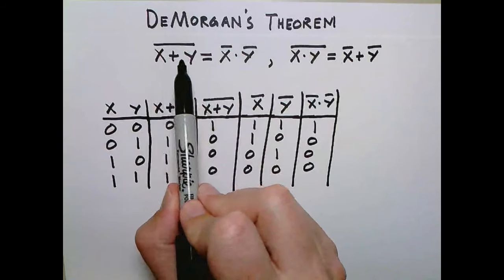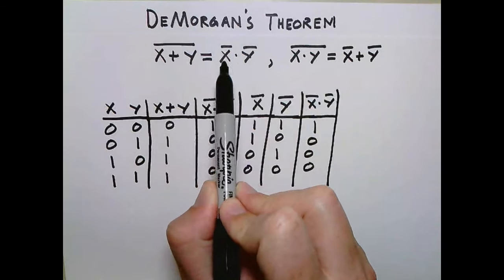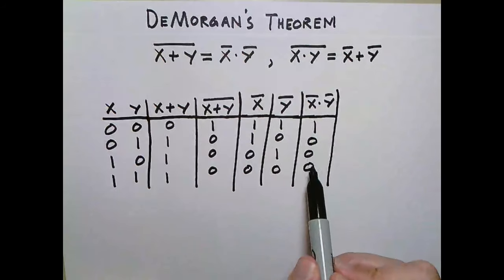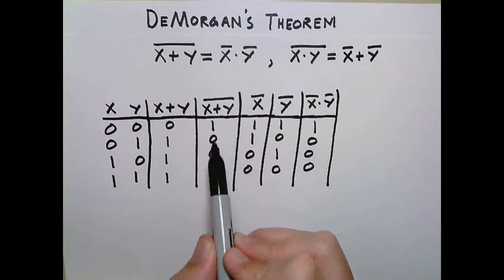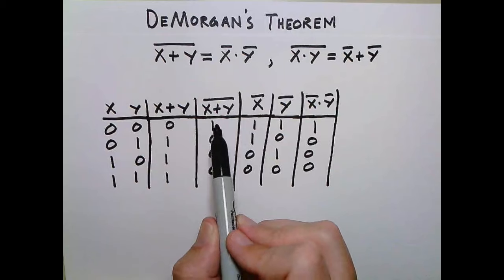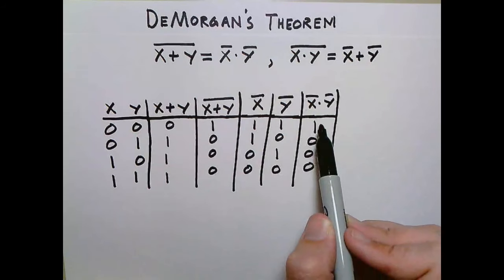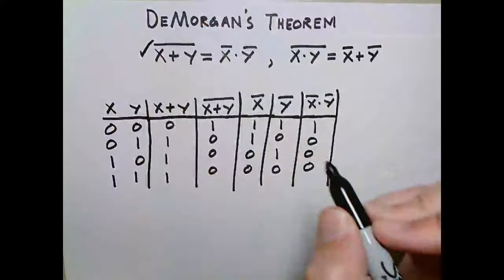So we have not x or y is equal to not x and not y, so this column should be equal to this column, and you can see they both go 1, 0, 0, 0. So this guy is true.